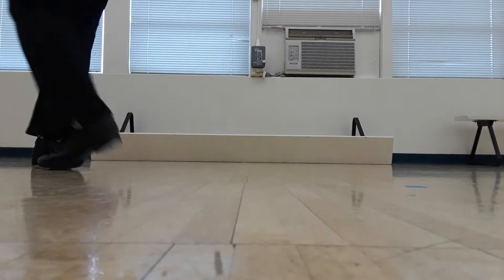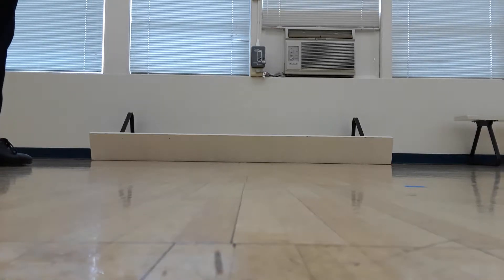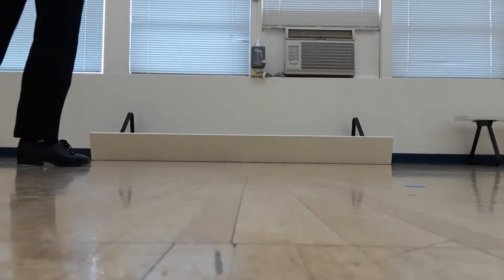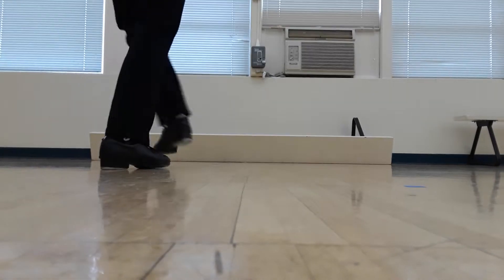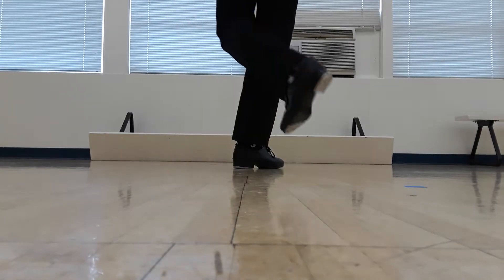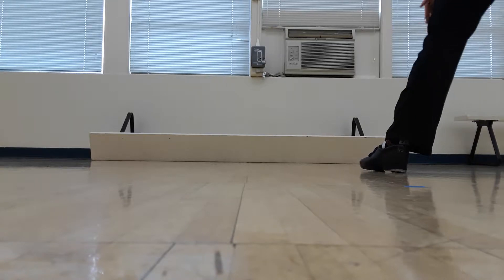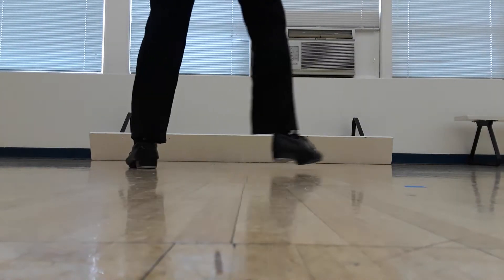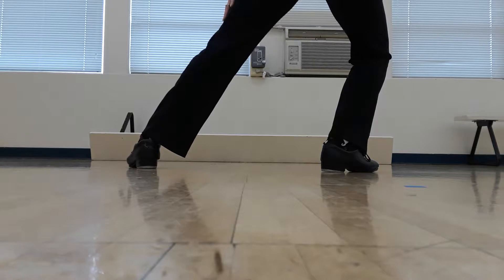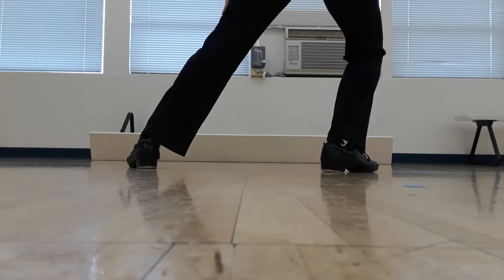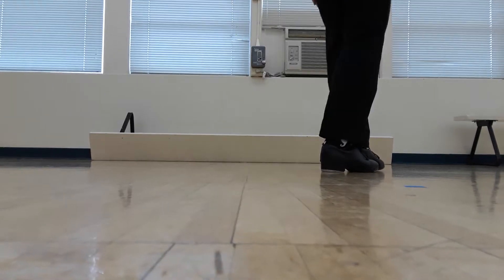So, let's try putting a jump in our grapevine. We're going to go side, behind, jump, front. Side, behind, jump, front. And then we're going to do a lunge. A lunge is where one leg is bent and one leg is straight. And don't worry about the arms right now, just worry about the feet.